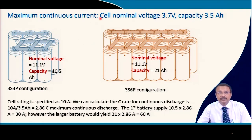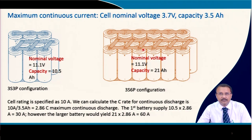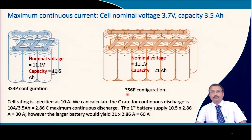For maximum continuous current estimation: if the cell nominal voltage is 3.7 V and capacity is 3.5 Ah, consider a 3S3P configuration — 3 cells in series and 3 in parallel, giving 11.1 V nominal and 10.5 Ah capacity. For a 3S6P configuration, the voltage remains 11.1 V but the capacity doubles to 21 Ah because there are 6 cells in parallel.